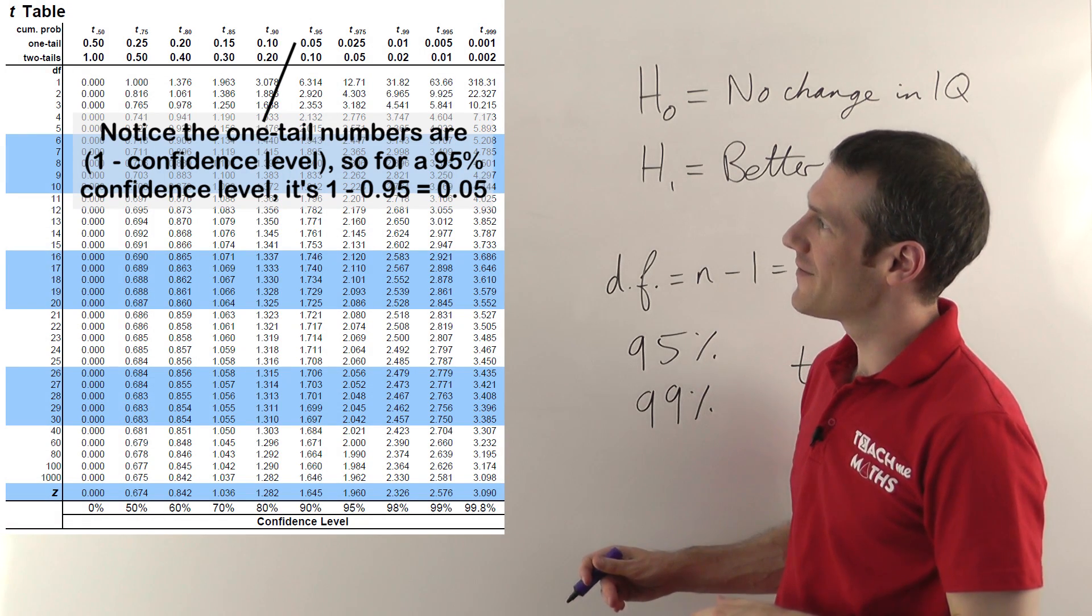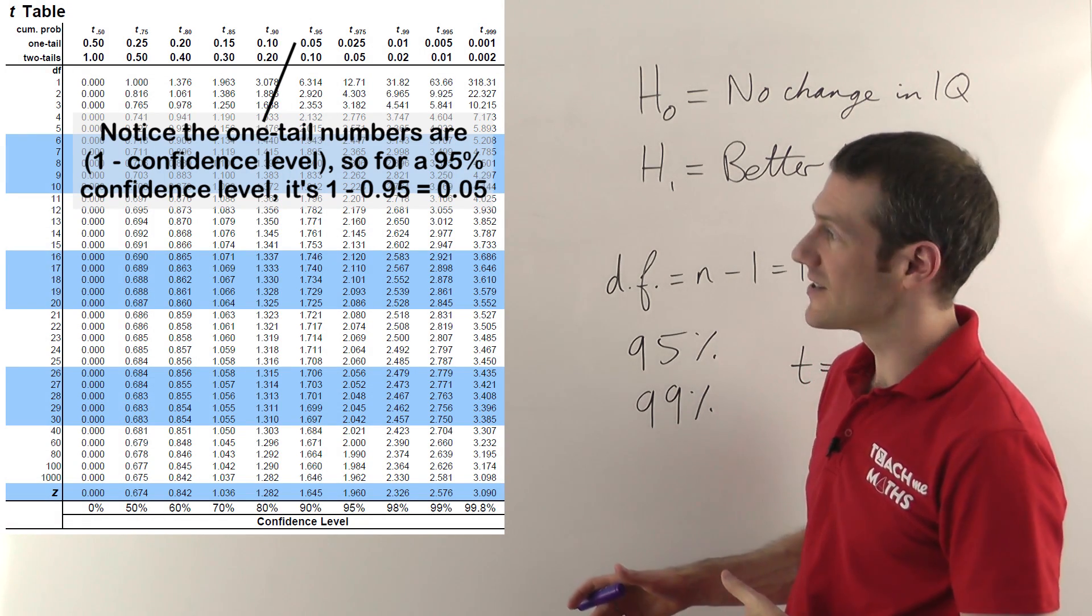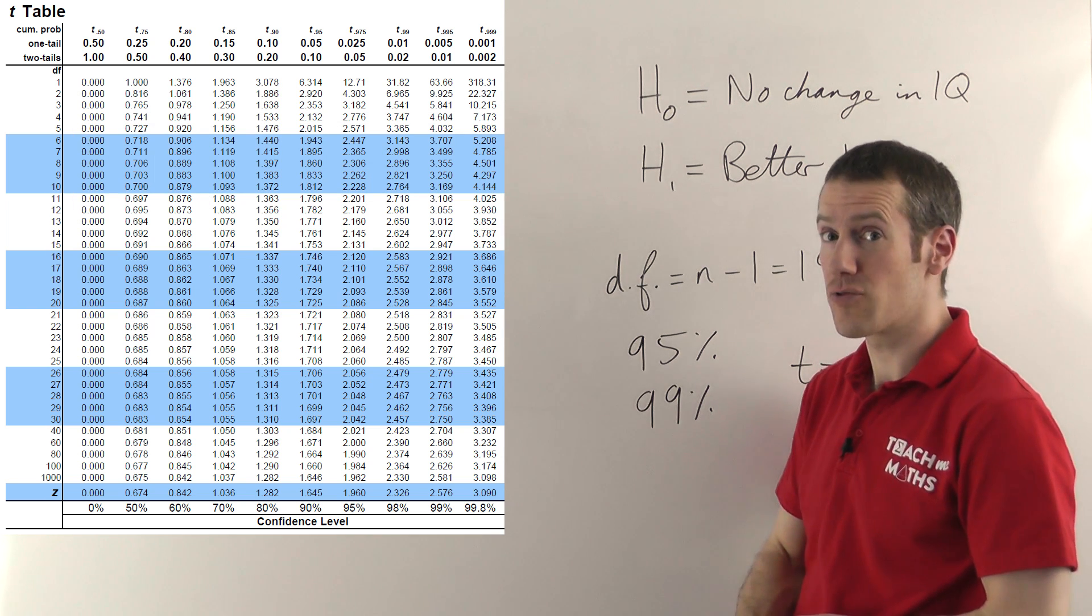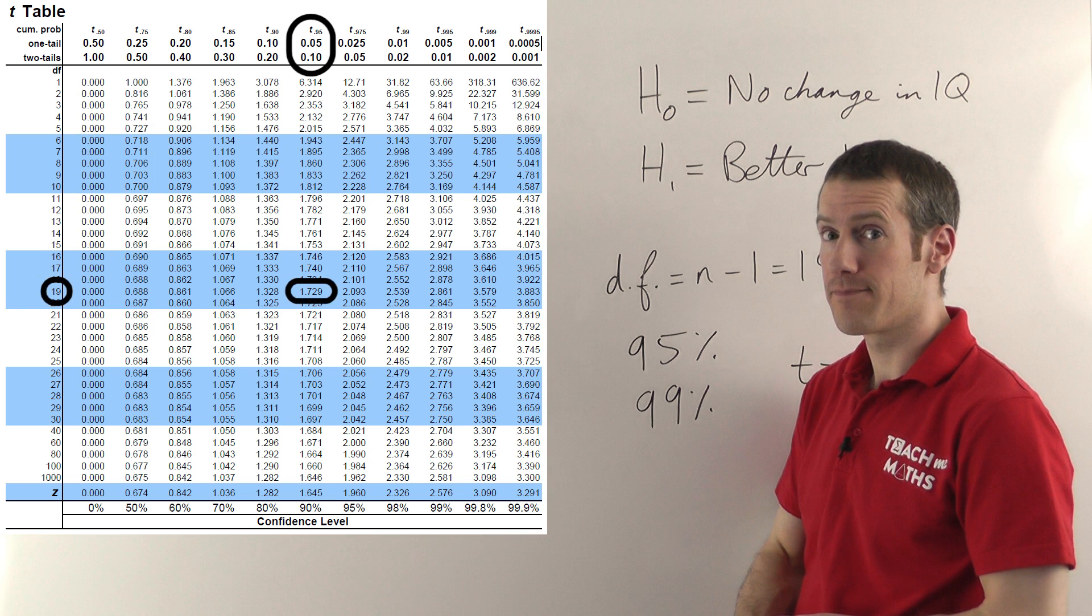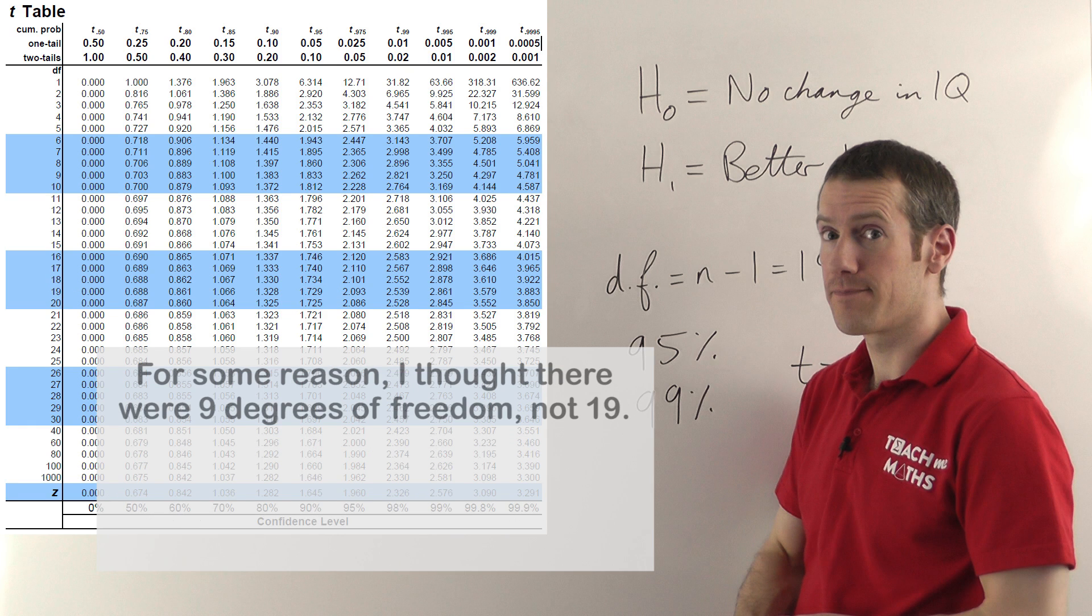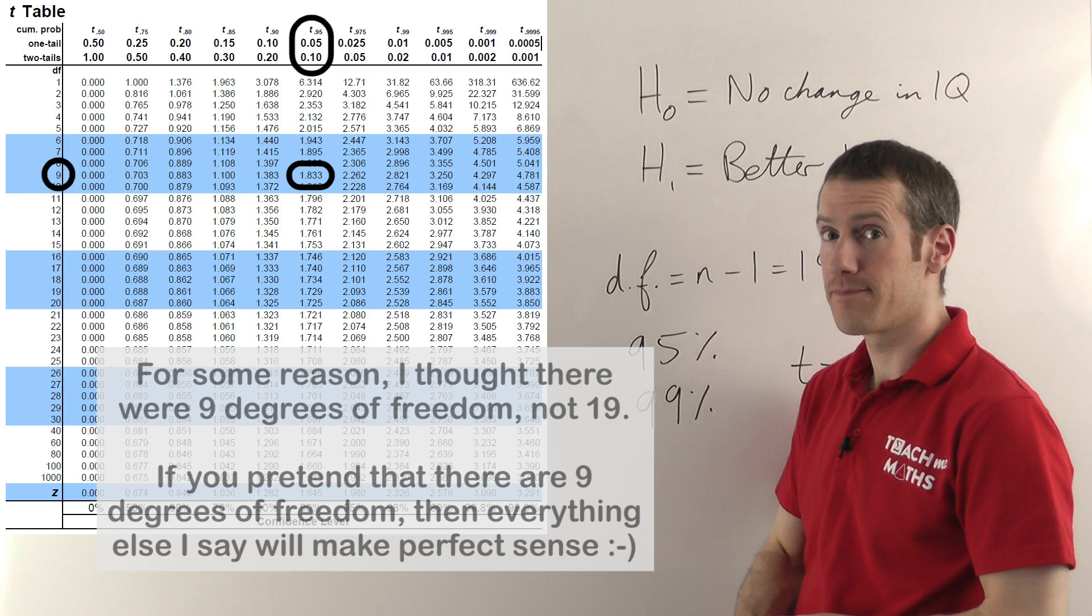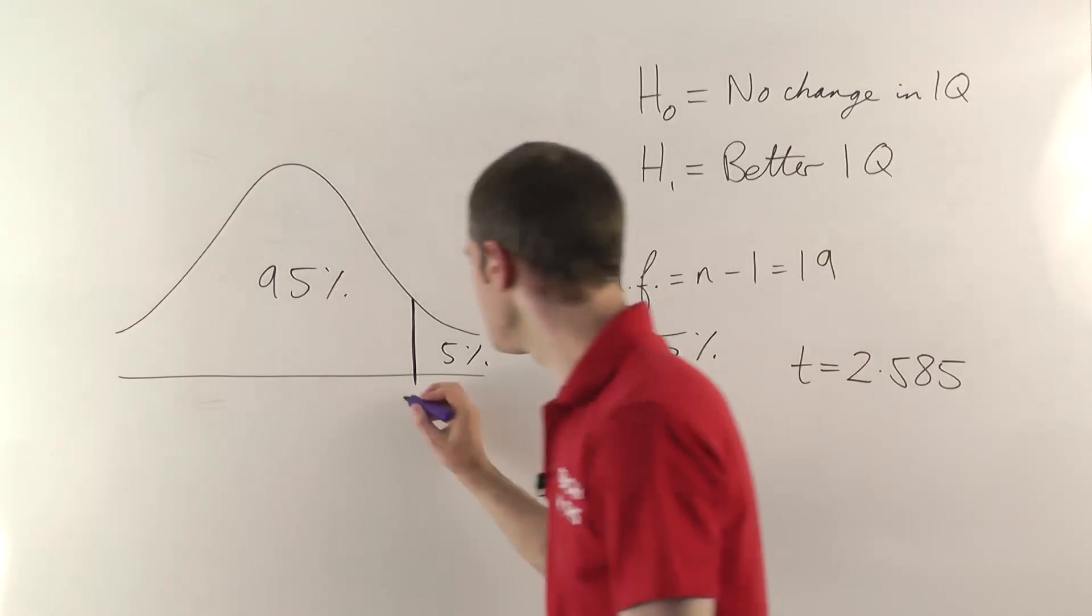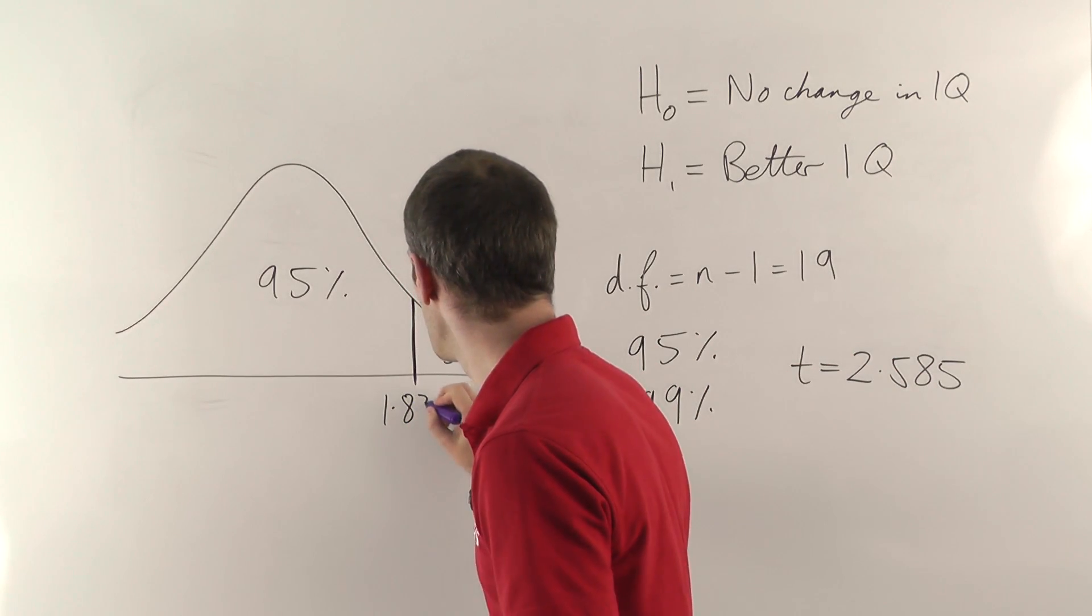Just going back to the picture again, you can see that there's one side that we're interested in. We're not bothered about what happens on the low end, we're assuming that they're going to improve. So this is why it's a one-tailed test, because there's a change in one direction only. Back to the table again. So if you read off, 0.95 at the top, 19 down the left hand side, the critical value here is 1.833.